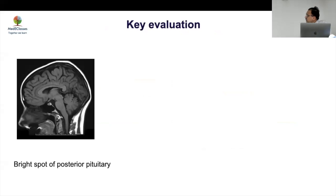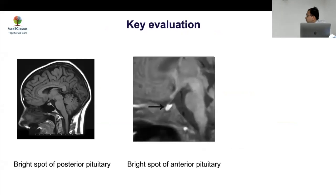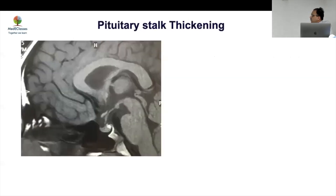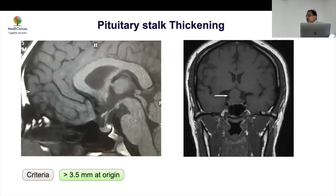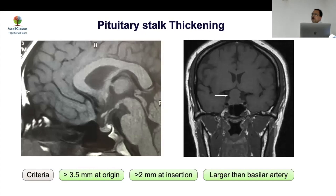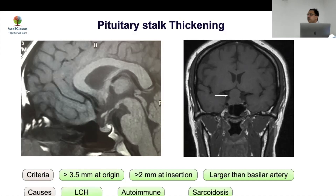A key thing to look at is the bright spot of the posterior pituitary, which gives information about posterior pituitary function. There can be a neonatal bright spot in the anterior pituitary — this is normal. The criteria for stalk thickening are: more than 3.5 mm at origin, more than 2 mm at insertion, larger than the basilar artery. In DI, figures of 4 mm and 6 mm are used — more than 6 mm you should go for biopsy. Causes include histiocytosis, autoimmune conditions, sarcoidosis, and germinoma.